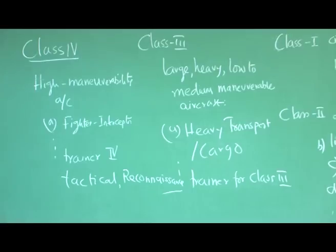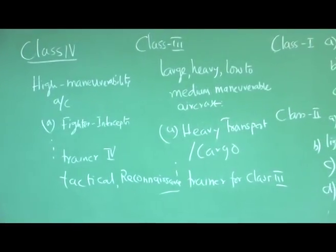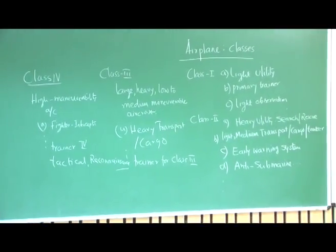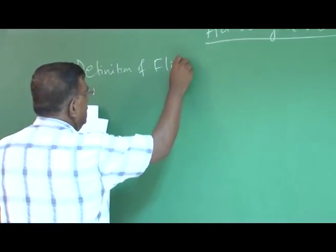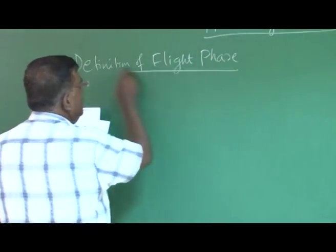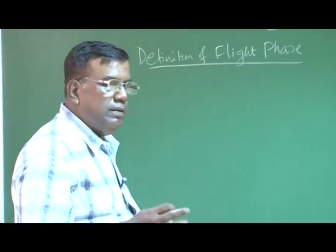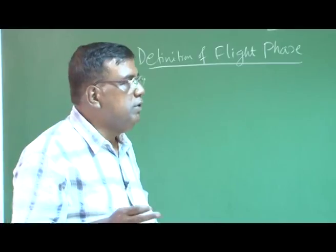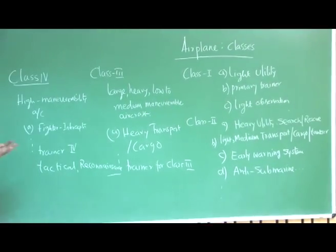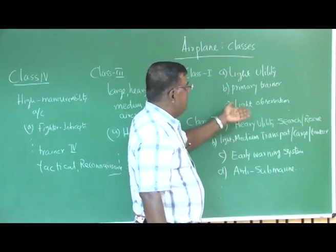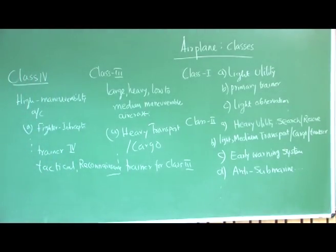The first approach is: depending upon the type of aircraft and which type of performance is required, there are classes 1, 2, 3, and 4. The second step is the definition of flight phase. To give you a complete idea about handling qualities, first you identify which class the aircraft belongs to — class 1, 2, 3, or 4. Then you check whether it is light utility, primary trainer, or light observation, and classify the airplane accordingly.